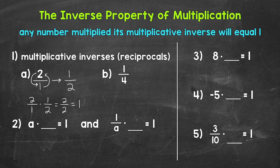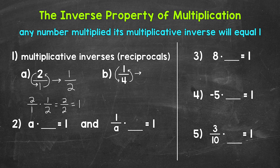So the multiplicative inverse or reciprocal of 2 is 1 half. Let's move on to b, where we have the fraction 1 fourth. The multiplicative inverse or reciprocal of 1 fourth — let's flip this fraction. The denominator is now the numerator and the numerator is now the denominator. So the multiplicative inverse is 4 over 1, which is 4.